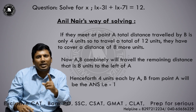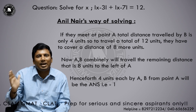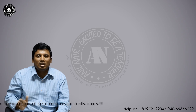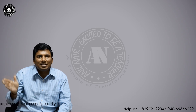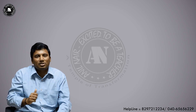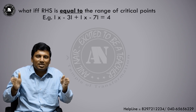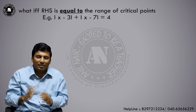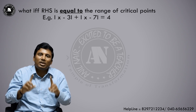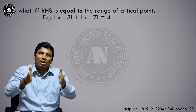Now you might get a doubt: what if the right-hand side is less than the distance between the two critical points? What if the right-hand side equals the distance between the critical points? For example: mod(x - 3) + mod(x - 7) = 4. Let us solve it logically.